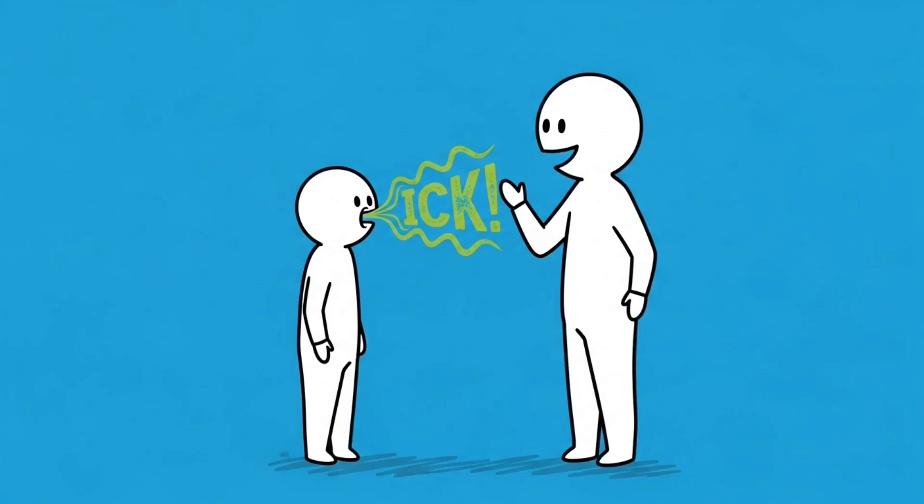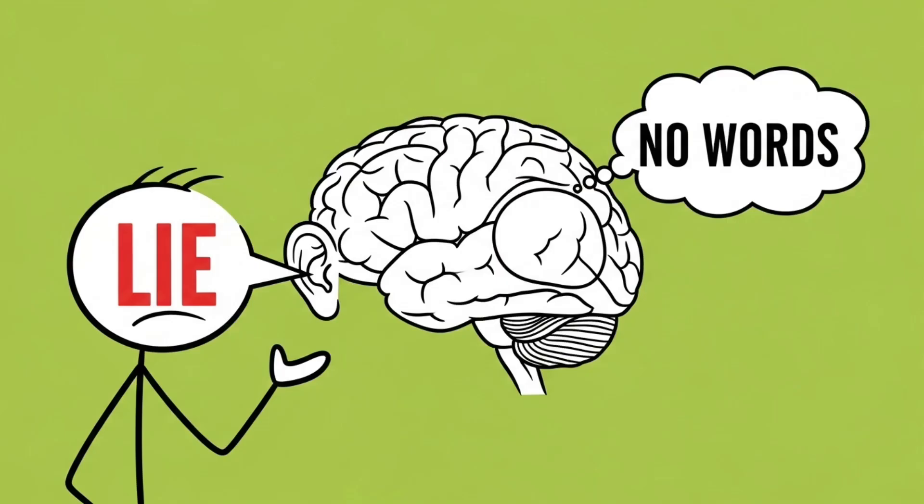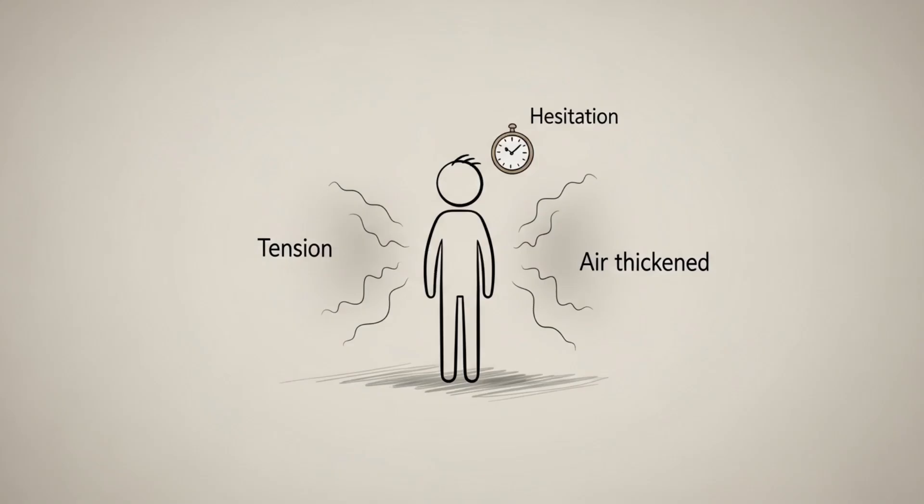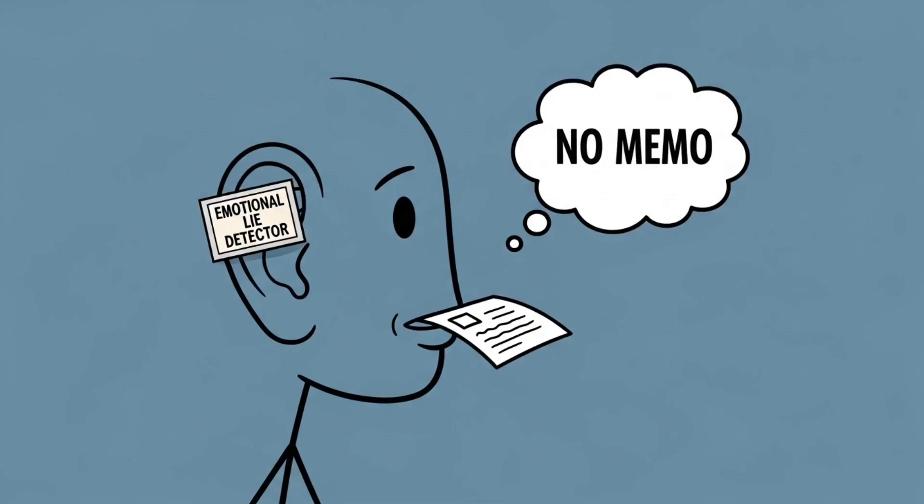You might think, hmm, she seems nice but something about her voice gives me the ick. That's not rudeness, that's neuroscience. Your brain hears the lie, it just doesn't translate it into words. It sends the message through feelings: tension, hesitation, that subtle sense that the air thickened by one percent. So yes, your ears know when someone's lying. They're basically emotional lie detectors. The problem is your mouth never got the memo.